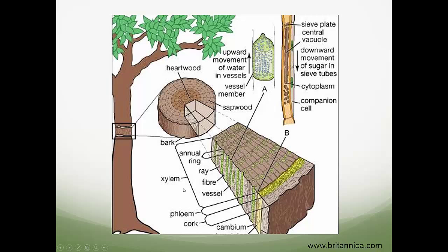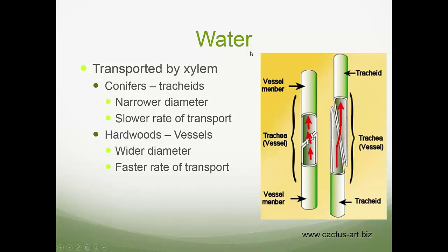Vessels are found in hardwoods and conifers have tracheids — they're slightly different. Conifers have tracheids that are generally narrower in diameter with a slower rate of transport. Hardwoods have vessels that are wider in diameter with a faster rate of transport. Think about how this ability to transport water may influence where you find an individual species — which might do better on a mesic site, not too wet and not too dry.